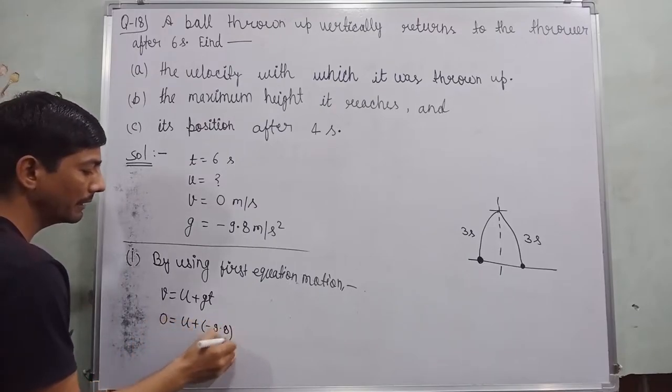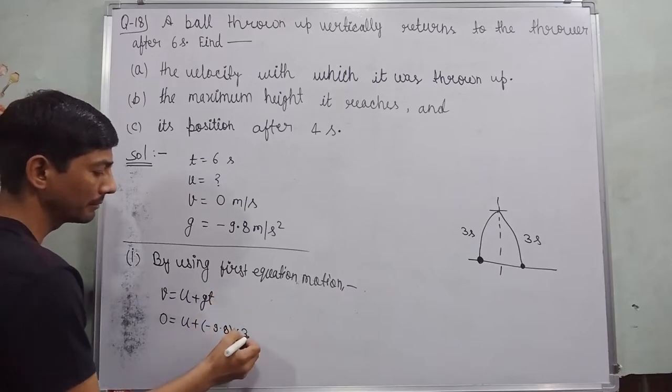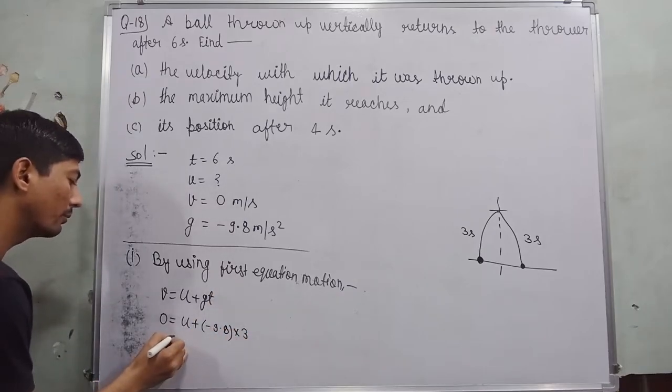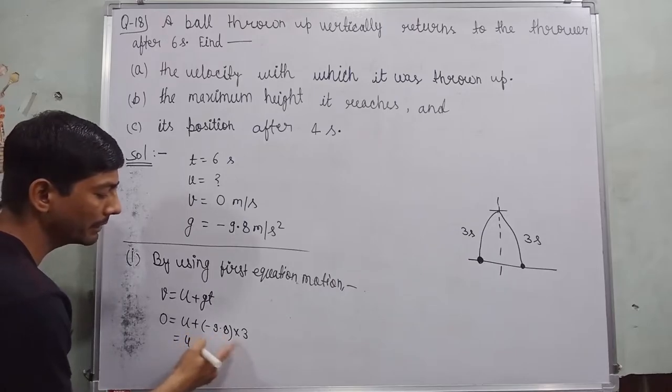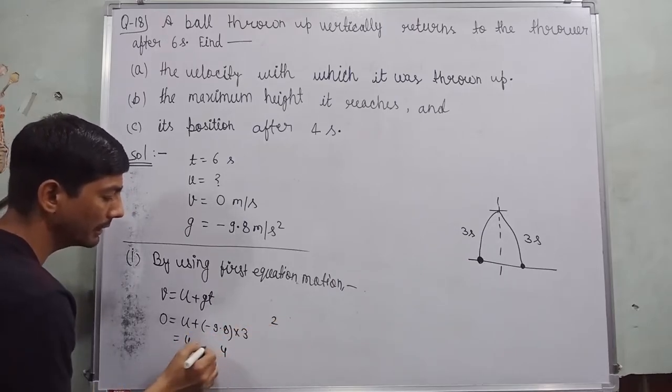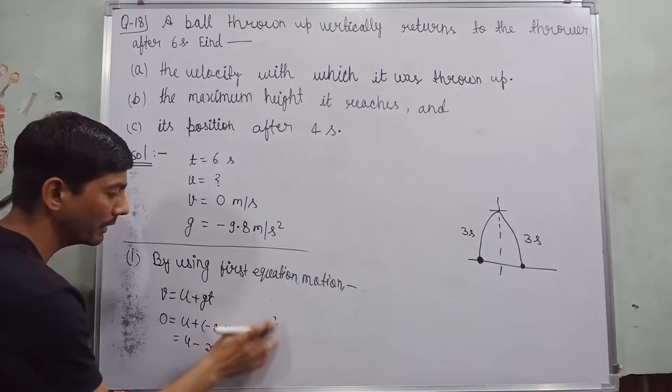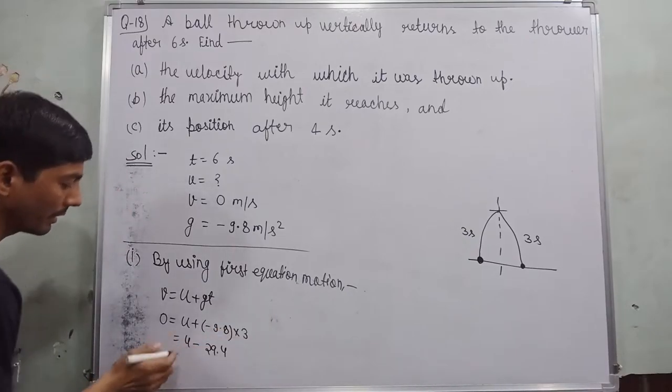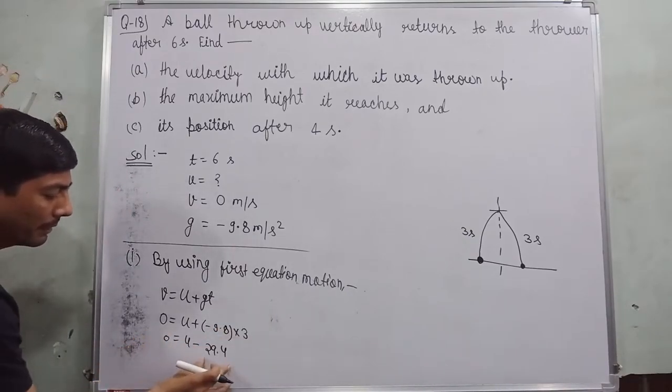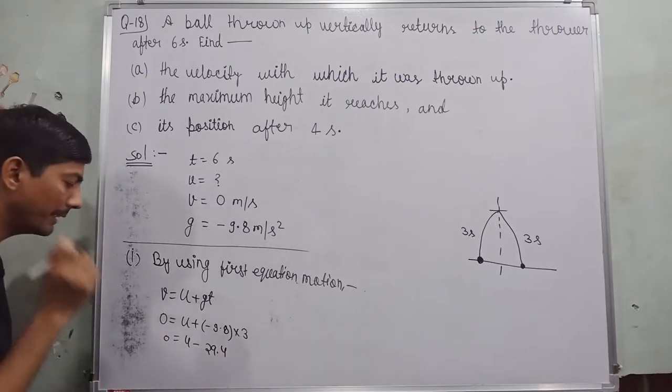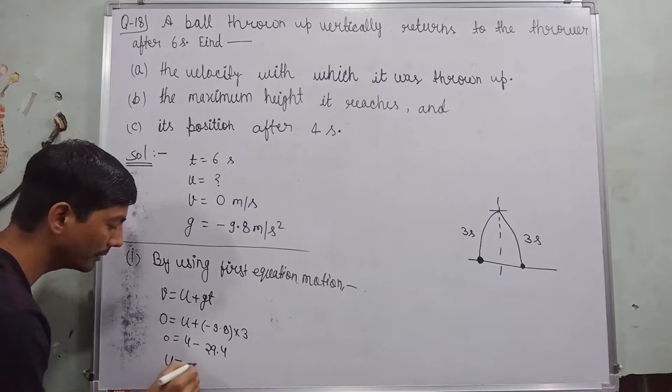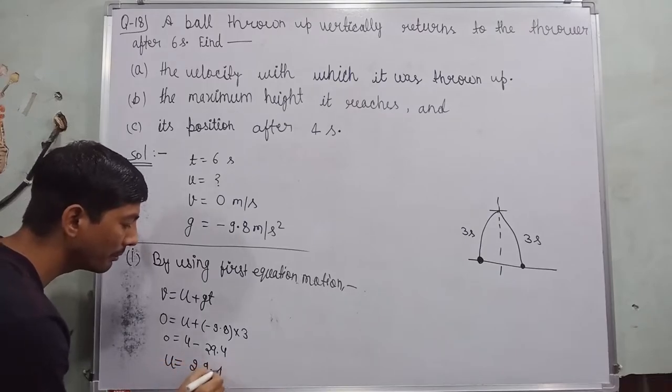which is v is equal to u plus gt, v is zero, u we need to find out, g is negative 9.8, t is 3 seconds. So when I solve it, u minus, multiply by 3 becomes 38 to 24 to carry 39 to 27 to 29. So